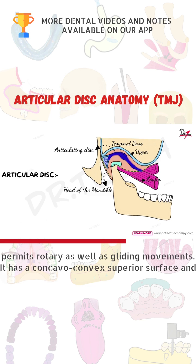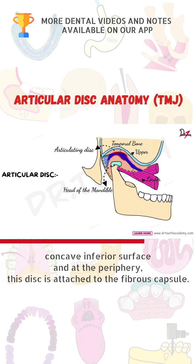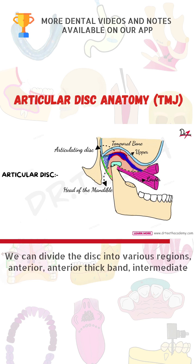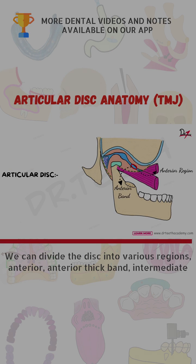Now if you look at this disc closely, it has a concavo-convex superior surface and a concave inferior surface. At the periphery of the disc, you can see that it is attached to the fibrous capsule. We can divide this disc into various regions: we have the anterior region, anterior thick band, and intermediate region.